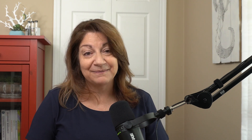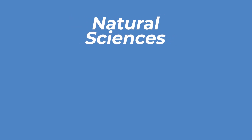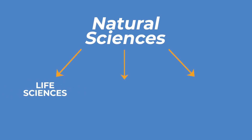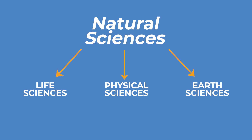The natural sciences can be divided into three major categories: the life sciences, physical sciences, and earth sciences. These three branches can be further divided into more specialized areas. However, these divisions are not so neatly separated in the real world, because there's lots of overlap.